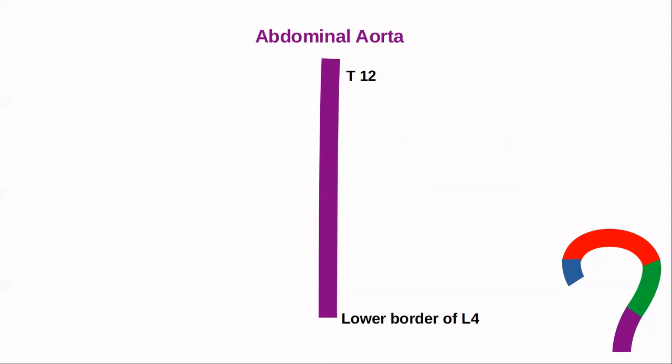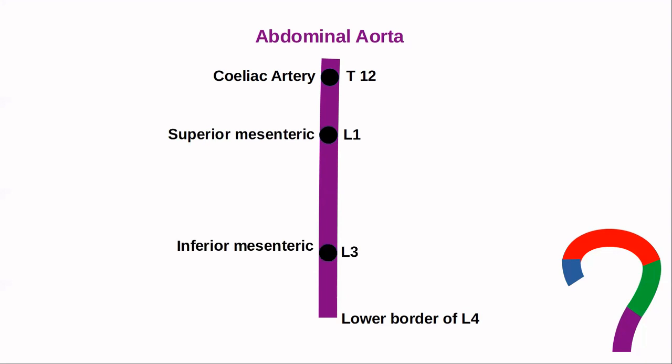The abdominal aorta arises at T12 where the aorta crosses the diaphragm and extends to the lower border of L4, ending by dividing into right and left common iliac arteries. The abdominal aorta has branches in three directions: ventral, lateral, and dorsal. The ventral branches are the celiac artery at T12, the superior mesenteric artery at L1, and the inferior mesenteric artery at L3.